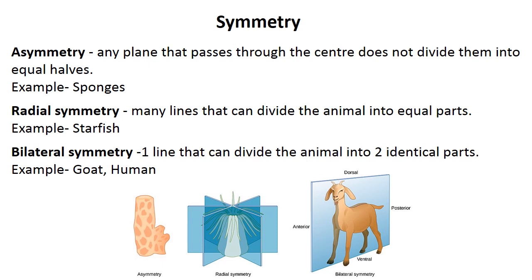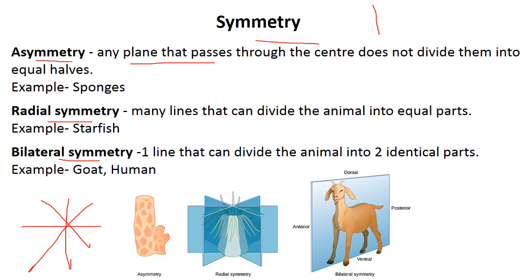First of all, we have to discuss about symmetry. Symmetry is the character where if an organism is divided into any plane, it has two equal parts. Symmetry is of three different types: one is asymmetry, the second is radial symmetry, and third is bilateral symmetry. Asymmetry means that any plane that passes through the center does not divide it into equal halves — like the example of the sponge.